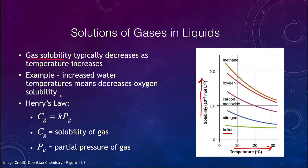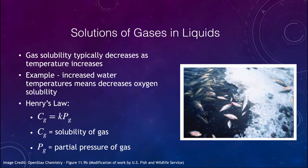An example of this is the solubility of oxygen in water. Increased water temperature means decreased oxygen solubility — there is less oxygen dissolved in the water. We see this in real life where fish have actually been killed because temperature increases decrease the amount of oxygen in the water.